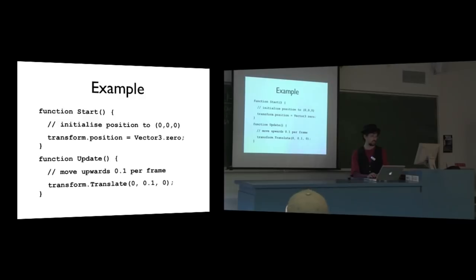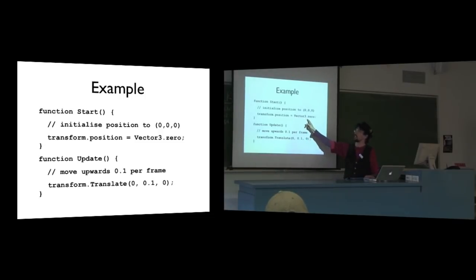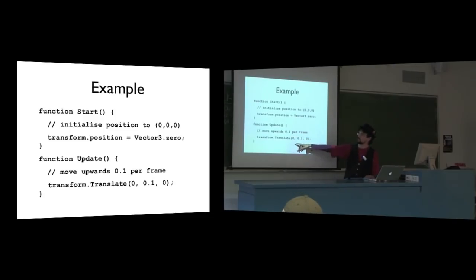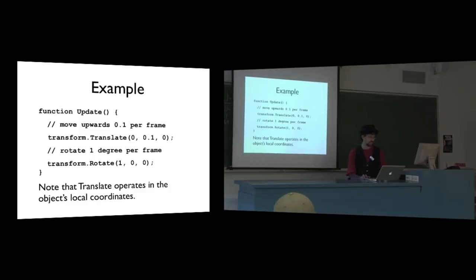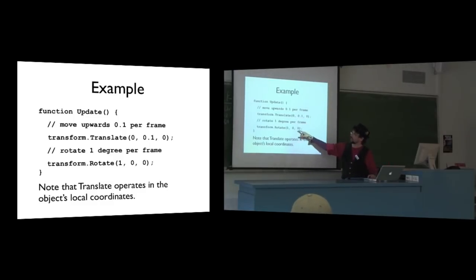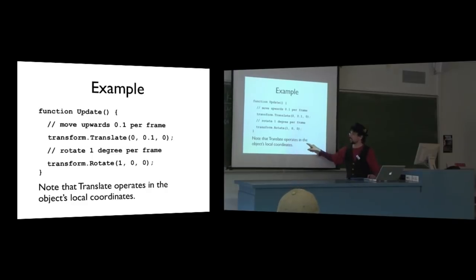The start method initializes anything that needs to be set up the first time you run your script. The update method makes changes from frame to frame. An example: if we want to initialize the position of an object to a certain location, we set that position in start — so as soon as the program starts, the object automatically moves to that location. Then we've already written update methods before which happen on every frame — we'll move 0.1 per frame, which is a simple call to translate to move 0.1 per frame. This runs once and once only. This runs every frame — about 30 or 40 times a second.